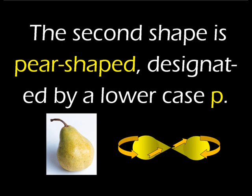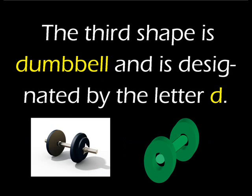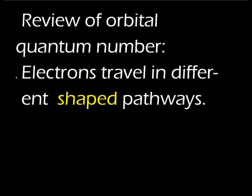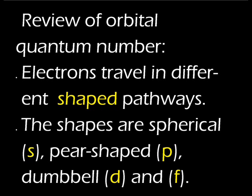The two remaining shapes, although not well described, are given the letters 'd' and 'f'. Some chemists feel the d-shaped orbits are shaped like a dumbbell, and then we have the f-shapes, which are not described at all. To review: the orbital quantum number tells the shape of the pathway that the electrons are following, designated by lowercase letters — s for spherical, p for pear-shaped, d possibly dumbbell, and f.